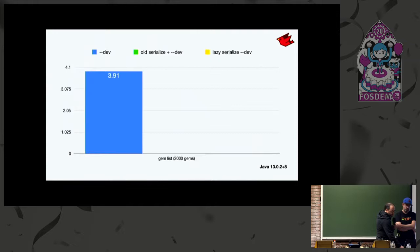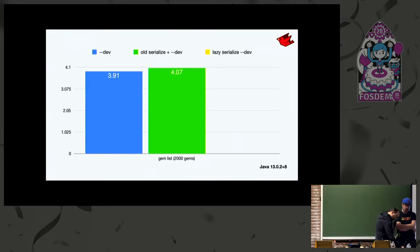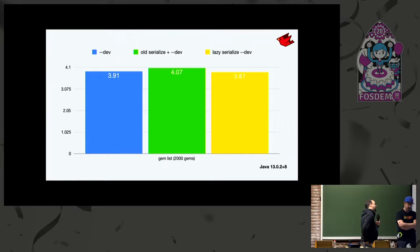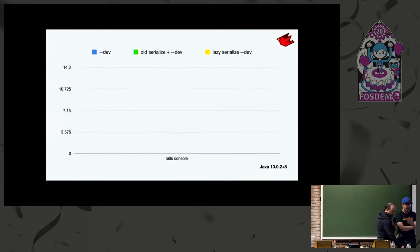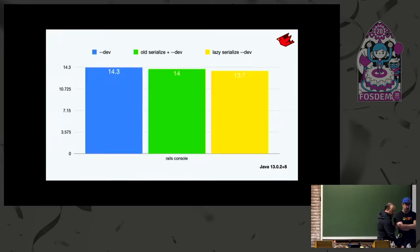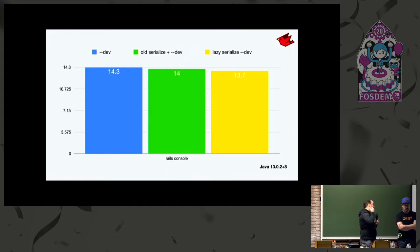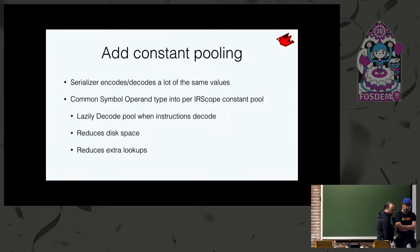Going to 2,000 gems — which happens to be my personal work dev environment — we can see it still improves. But it's getting a little less interesting. Enough stuff starts warming up at the JVM level that we don't get as much gain. And on this last one going into Rails console — with multiple invocations of Ruby — serialization really isn't playing any role at all, so there's a different issue with startup there.